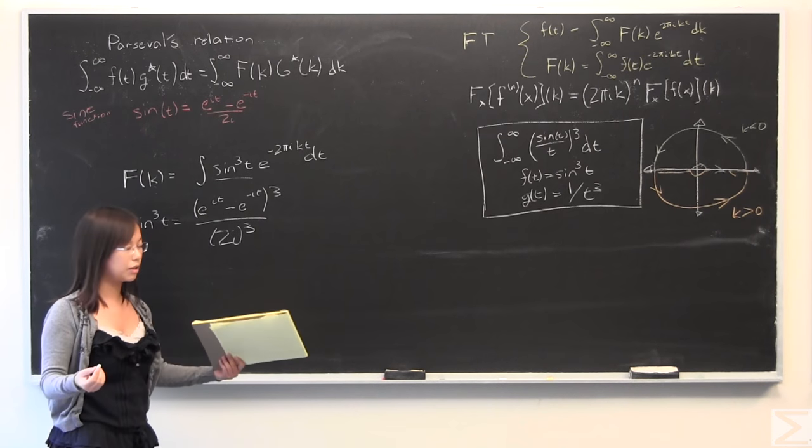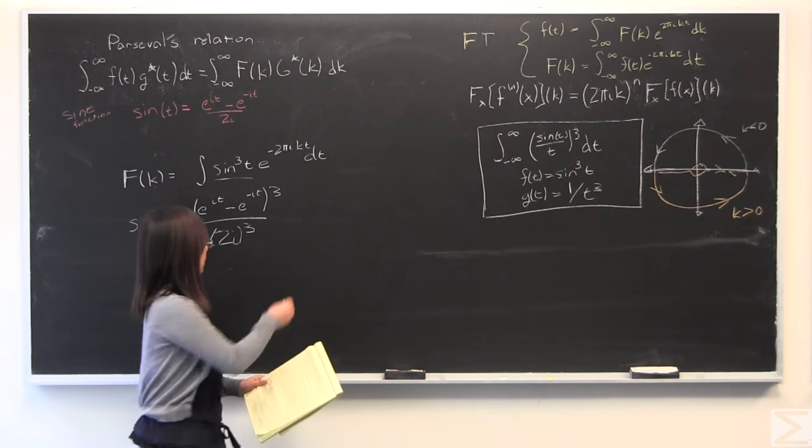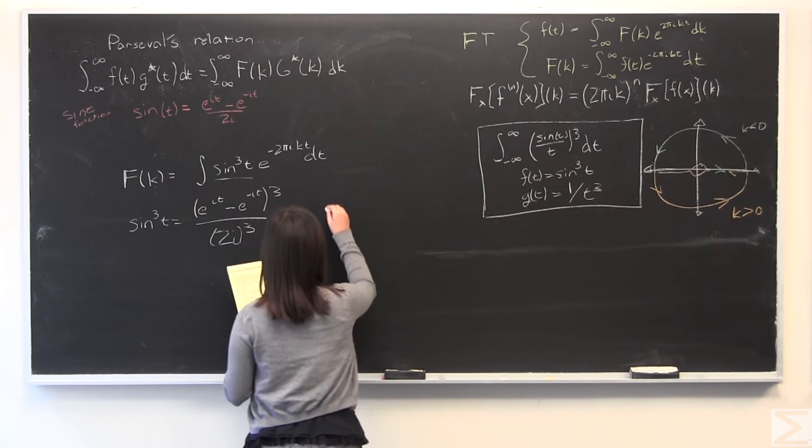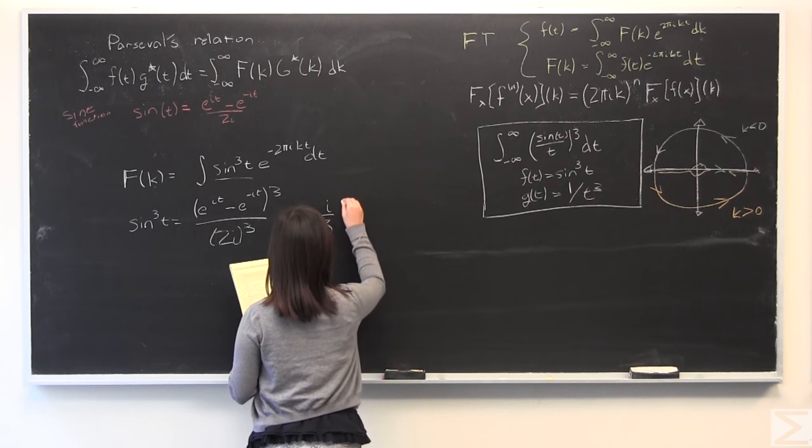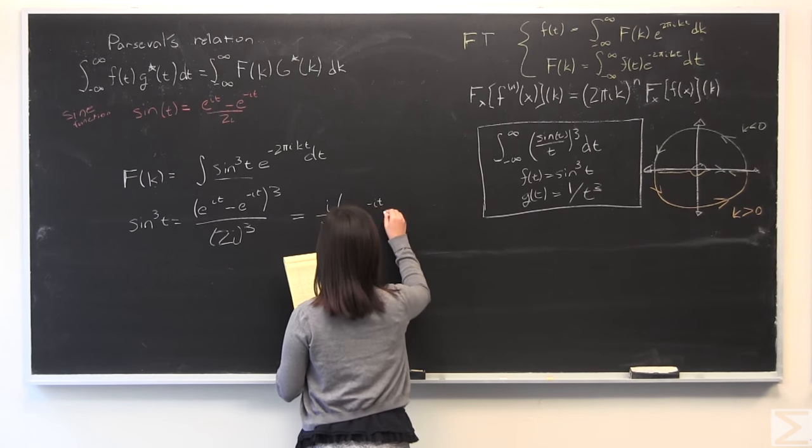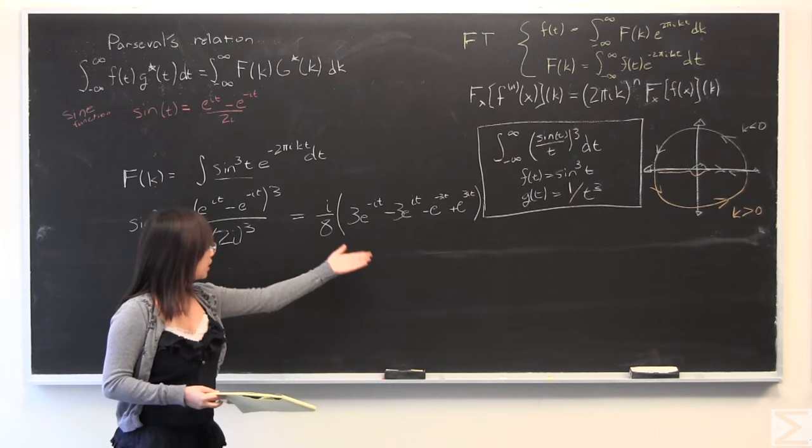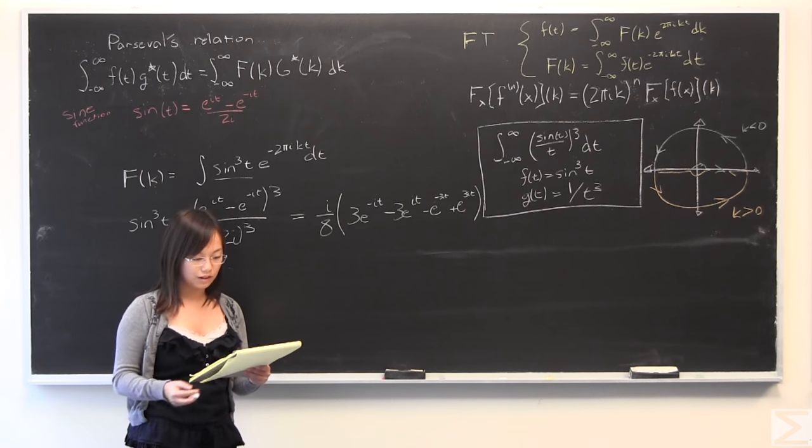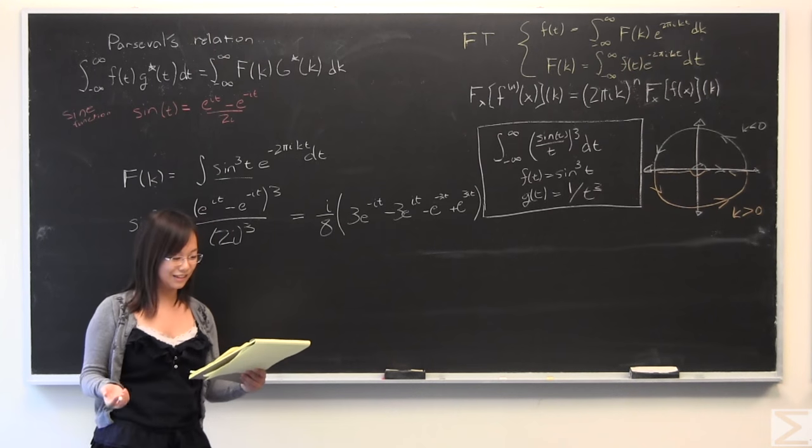So when you evaluate this, I'm going to write it out, you get a bunch of e terms with exponents. You get i over 8. And that's ultimately what you'll get after you FOIL. You can just take my word for it. I have checked it over.